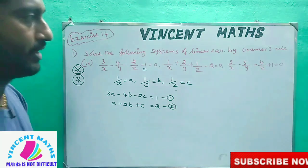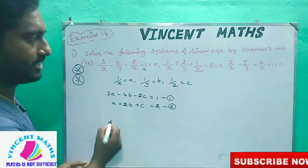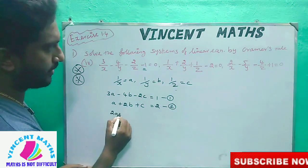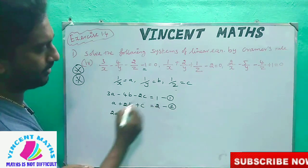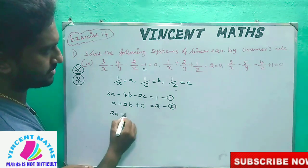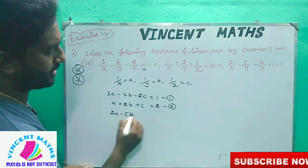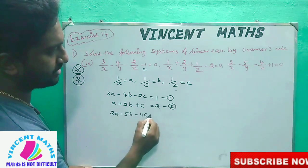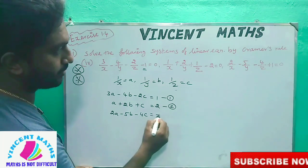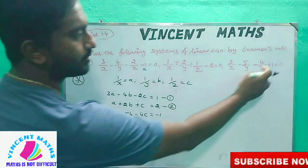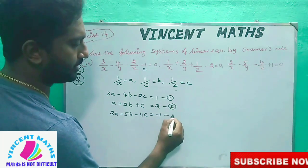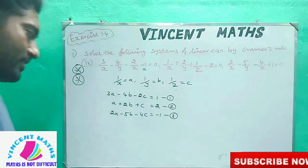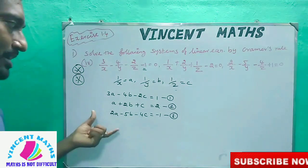The third equation is: 2A minus 5B minus 4C equal to minus 1. Now this is equation 3.